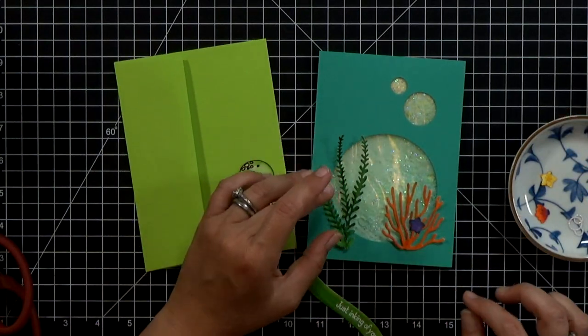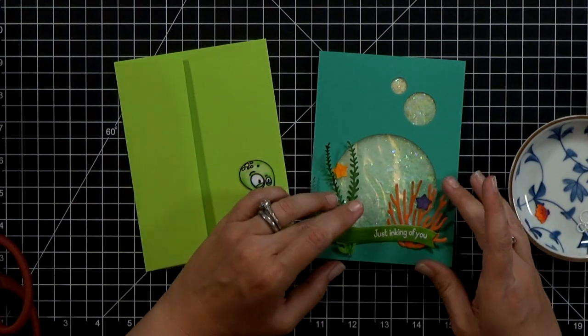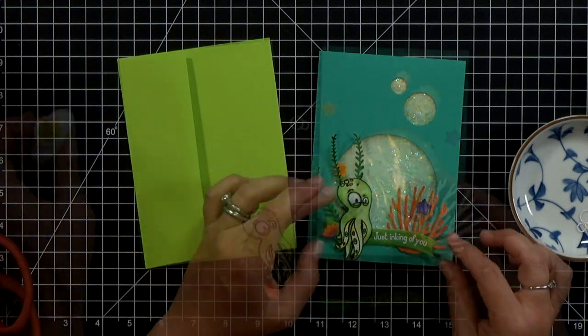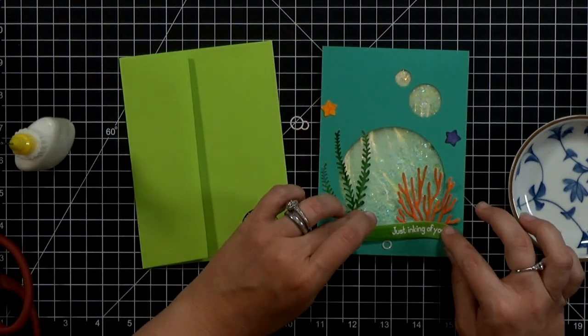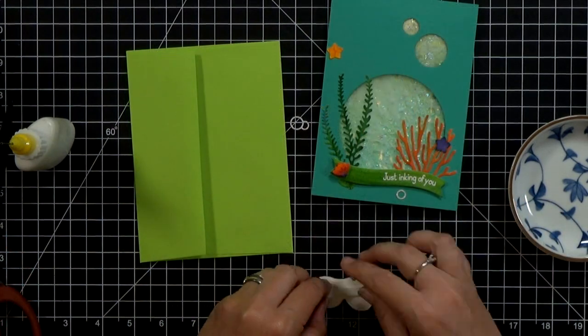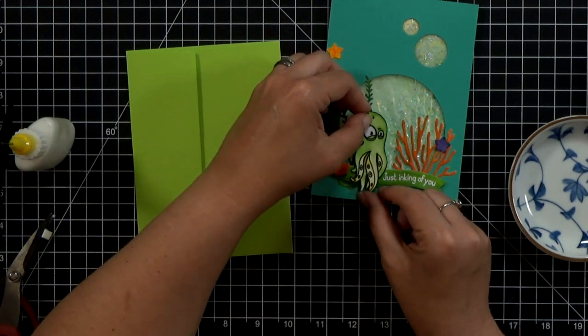So I've gone ahead and pulled out all of my pieces for this card. My sentiment is already stamped and embossed. And I will just lay out the different pieces, place them where I want them. And I'm going to use a combination of PVA glue and foam tape to adhere the pieces to my card.